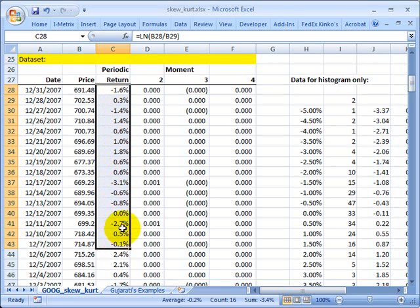That gives me the continuously compounded periodic return. So then I have a series, a historical series of periodic returns, in this case for Google's calendar year 2007. So I have 251 of them. And that's the series I can ask about, what's the distribution?